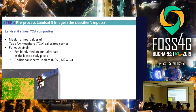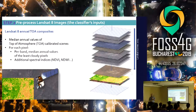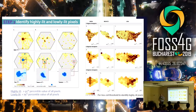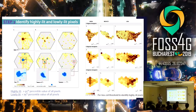We used Landsat 8 annual composites, created annual composites, and added other spectral indices. Now we have the pixels with all the inputs we want to predict. We defined the threshold of nighttime lights per hexagon, because if we want to capture also villages that do not emit a lot of nighttime light, the threshold will be lower. This is why we defined this threshold for each hexagon independently, and you can see the variations in this threshold.